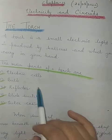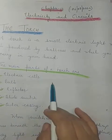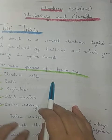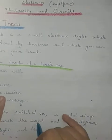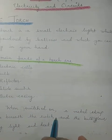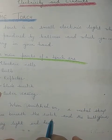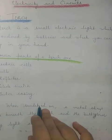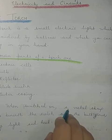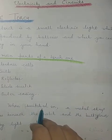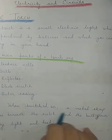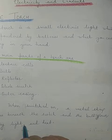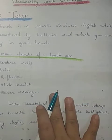These are the main five parts of the torch and they all play a very important role in the functioning of the torch. Whenever we switch on the torch, a metal strip moves beneath the switch and the bulb glows, giving light and heat.